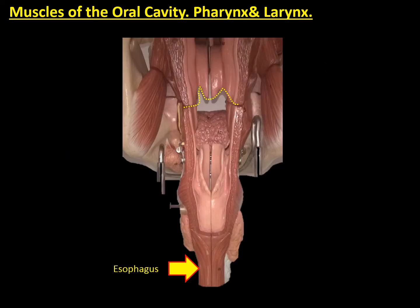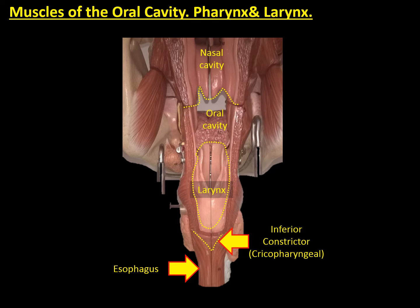If we now remove the constrictor muscles, we can see the connections of the pharynx with other structures from the head and the neck. At the upper part, we can see how the pharynx is connected to the nasal cavity. By the mid portion, the pharynx is connected to the oral cavity. At the very end, we can observe how the pharynx is linked anteriorly with the larynx. We want to mark the very end of the pharynx at the inferior constrictor. We have seen a band of muscle called the cricopharyngeal muscle, which acts as a sphincter that is linked to the esophagus.